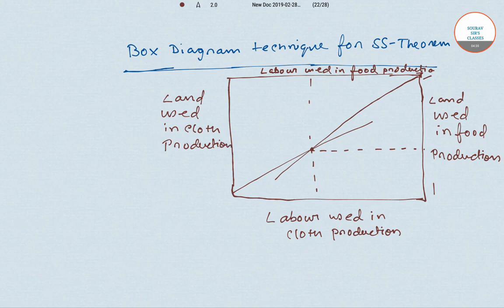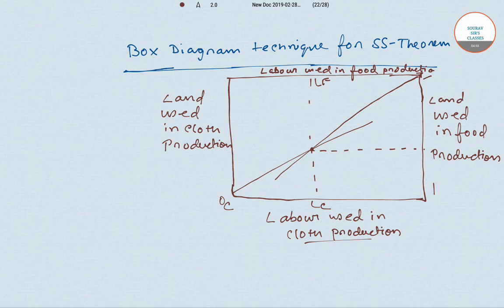Here we write origin OC, and we label LC — that is labor used in cloth production — and LF here. We denote cloth by C and food by F. We also write TC here and TF here.